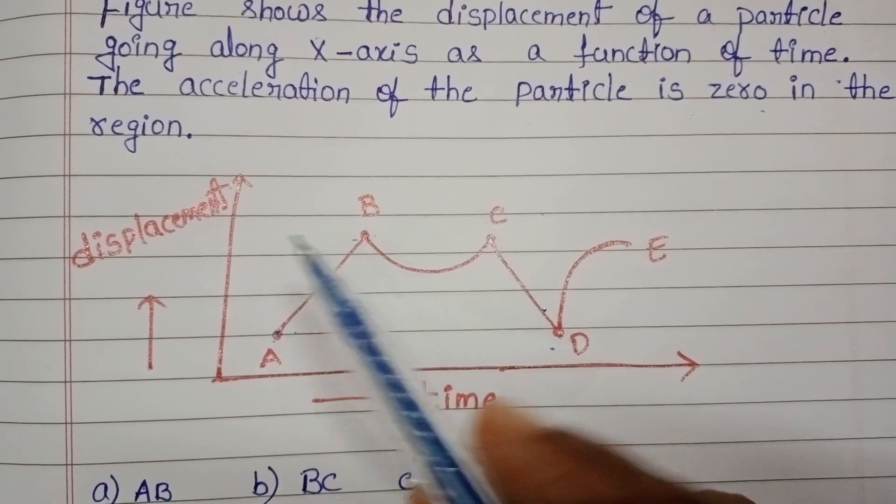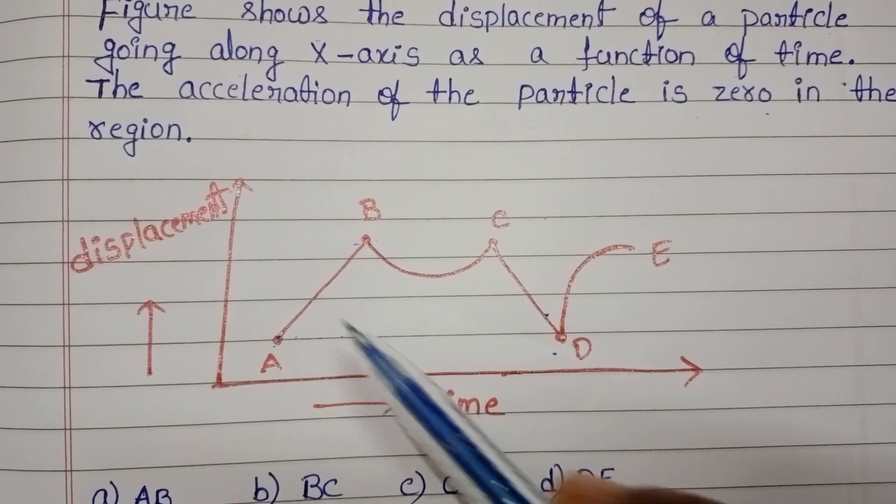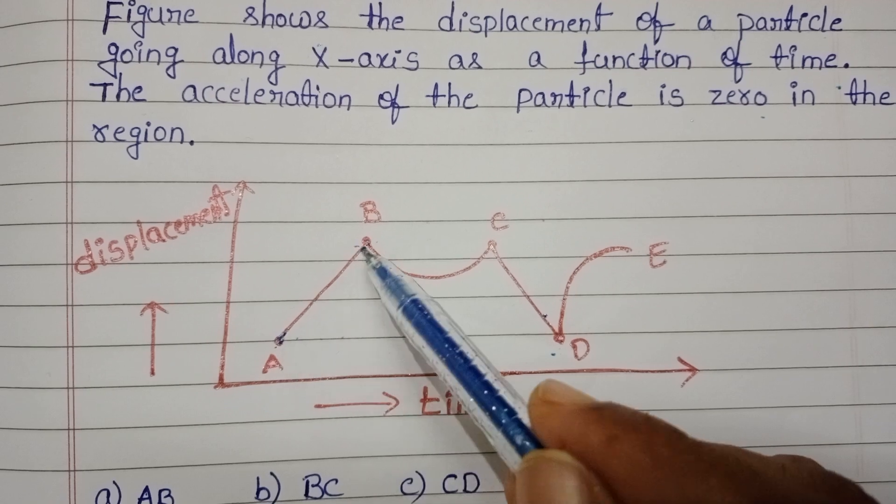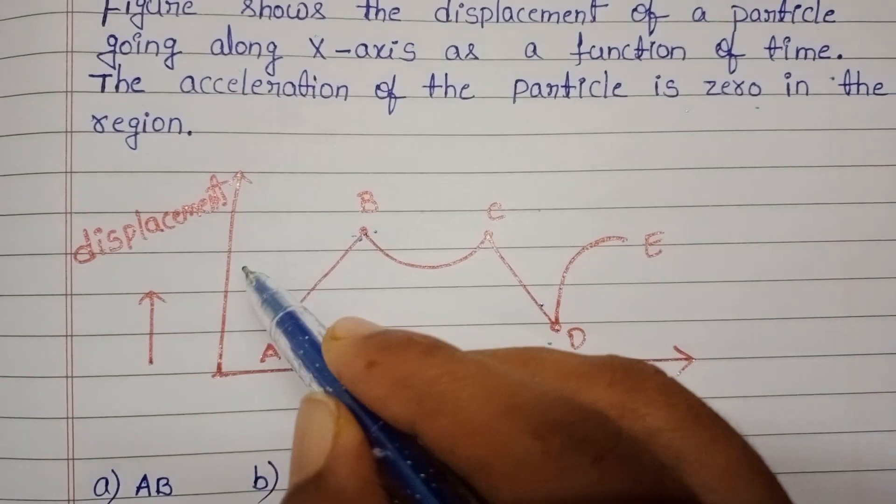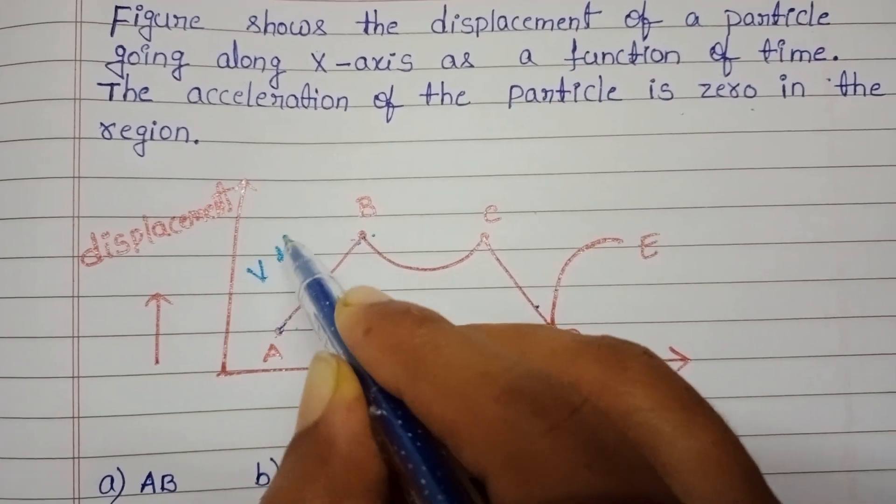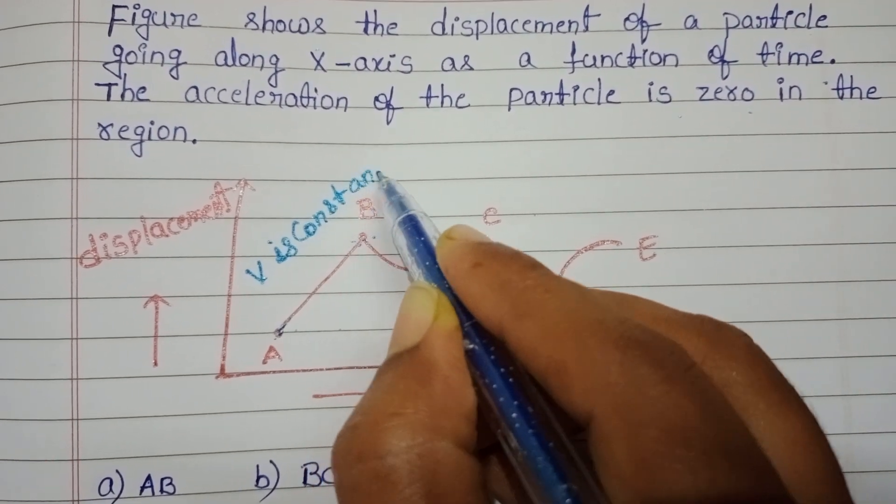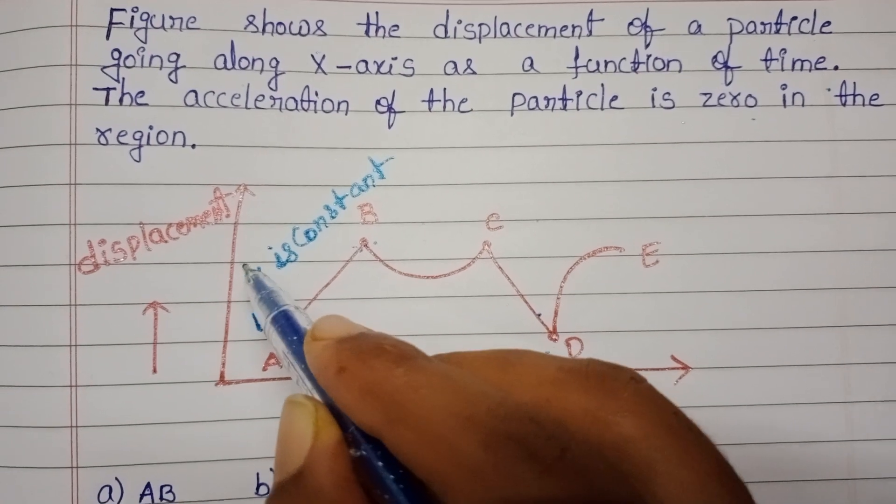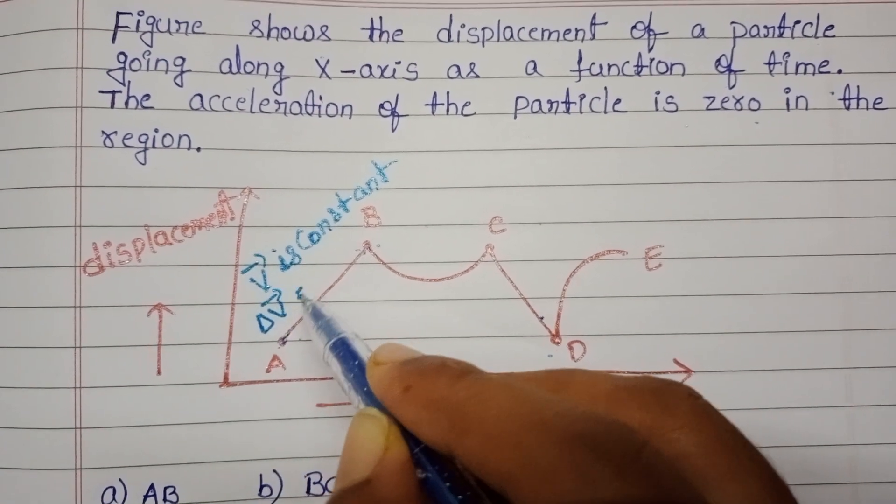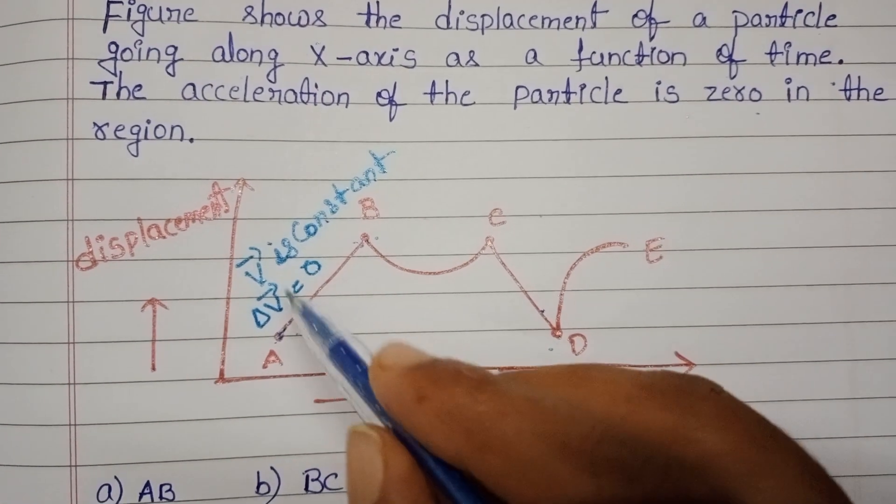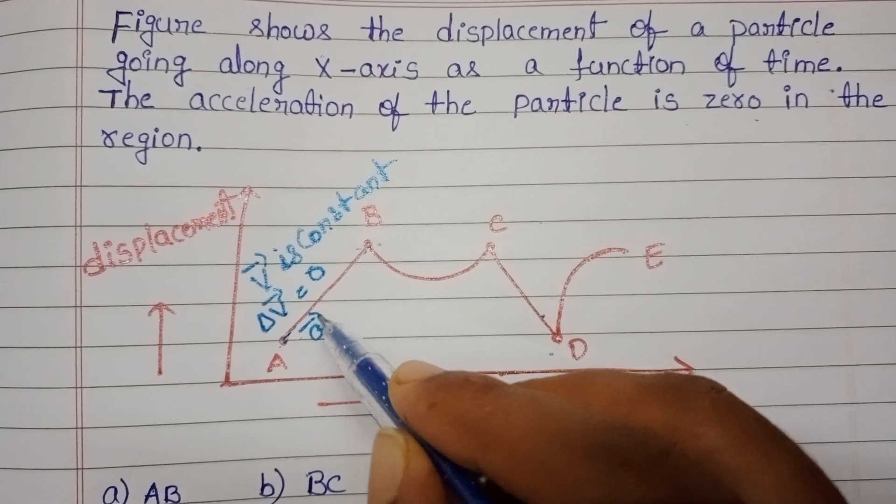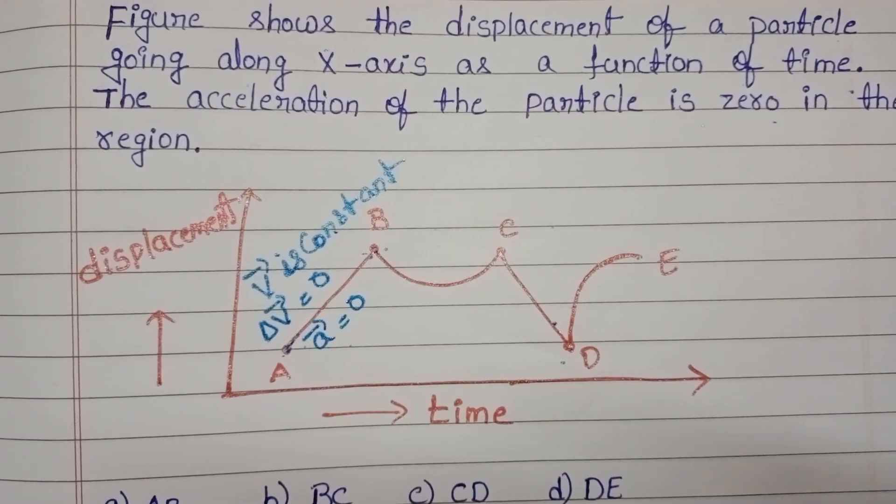So A to B, slope of this region is constant. That means velocity is constant in AB region. When velocity is constant, then change in velocity equals zero. When change in velocity is zero, then acceleration equals zero.